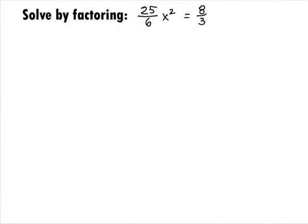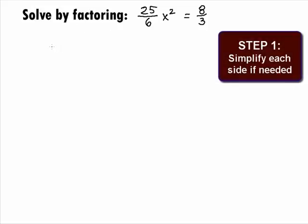In this example, we want to solve the quadratic equation 25 over 6 x squared equals 8 over 3 by factoring. In Step 1, we want to simplify each side if needed.